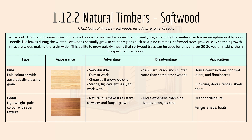Softwood comes from coniferous trees with needle-like leaves that normally stay on during winter, just like Christmas trees. Larch is an exception as it loses its needle-like leaves during winter. Softwoods naturally grow in colder regions such as alpine climates. Softwood trees grow quickly so their growth rings are wider, making the grain wider. This ability to grow quickly means softwood trees can be used for timber after 20 to 30 years, making them cheaper than hardwood.